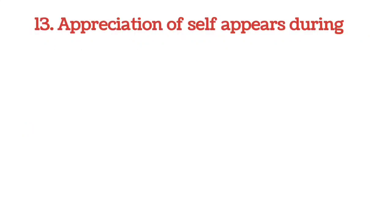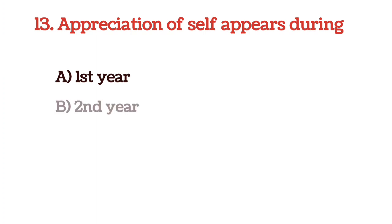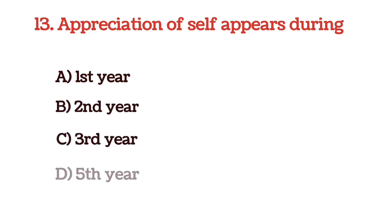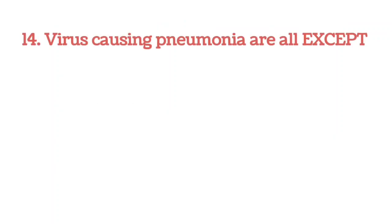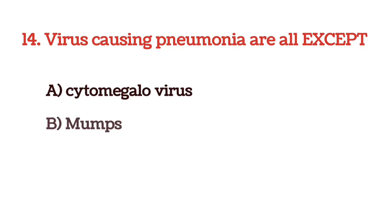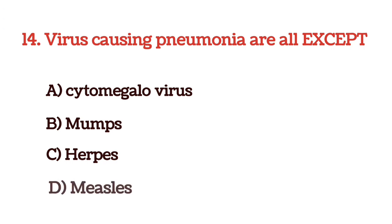Next question: appreciation of self appears during — options are 1st year, 2nd year, 3rd year, and 5th year. The answer is option B, 2nd year. Next question: viruses causing pneumonia are all except — options are cytomegalovirus, mumps, herpes, and measles. The answer is option B, mumps.